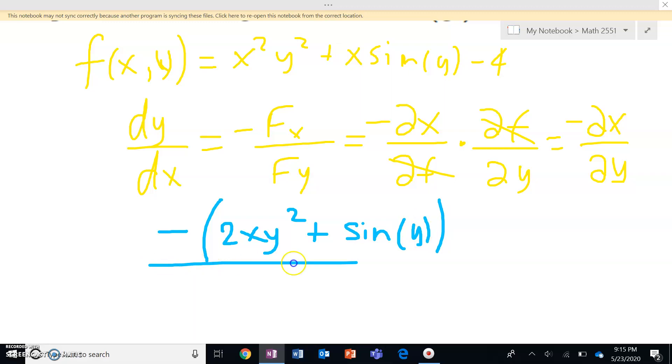And now, I've got to divide that by the partial derivative of the function with respect to y, which is just, for the record, 2yx squared, 2xy squared plus x cosine y. So, yeah, that's our dy over dx. As simple as that.